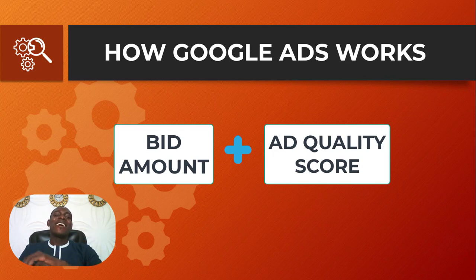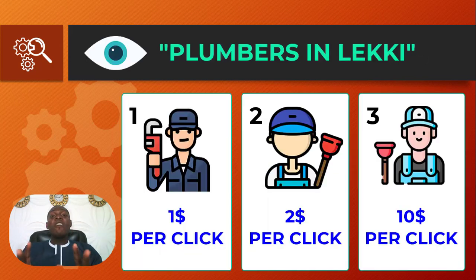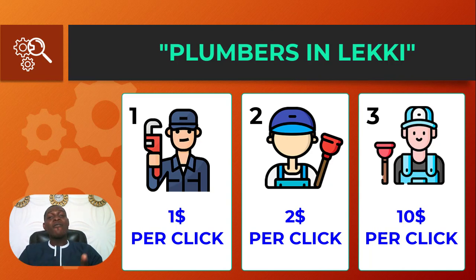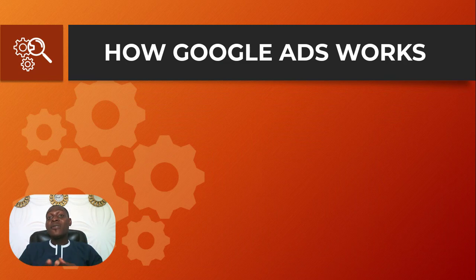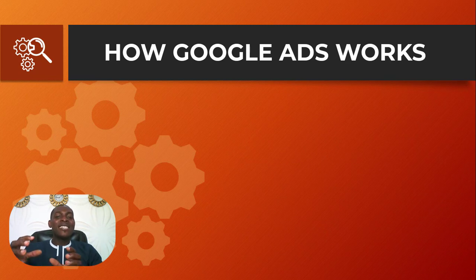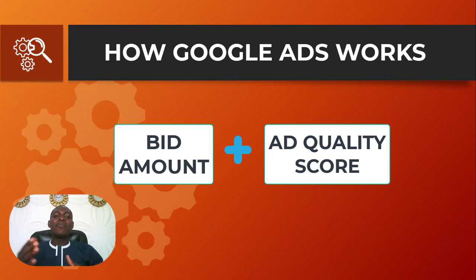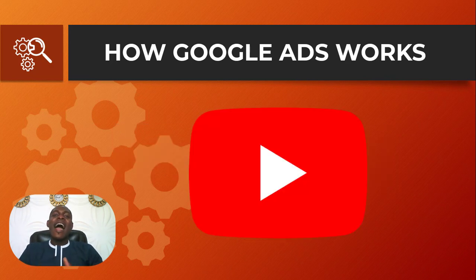Google adds this quality score plus the amount you have bid, and determines your ad position on the search results. So if plumber one with a low bid works on improving his quality score, he can gain the top spot over plumber three who offered $10 per click. When a user searches for one of these target keywords, Google's ad auction system determines which ad to display based on both the bid amount and the quality score. Ads are displayed at the top and bottom of the search results page and on other Google-owned properties such as YouTube and the Google Display Network.